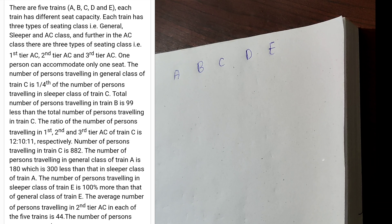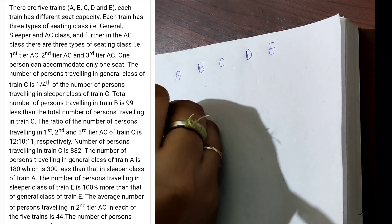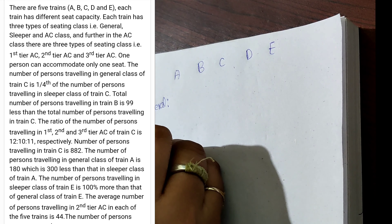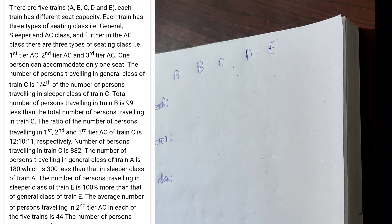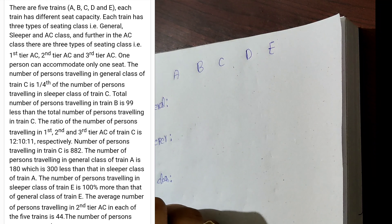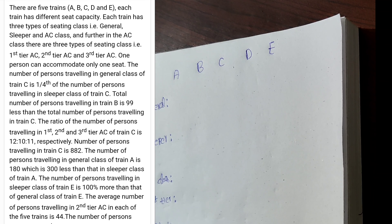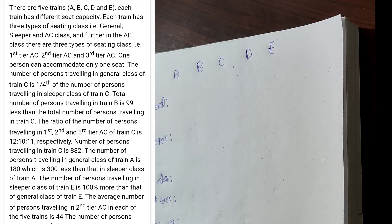The given problem states there are five trains A, B, C, D, E. These five trains each have different capacity. Each train has three types of seating classes. The first seating class is General, the next seating class is Sleeper.